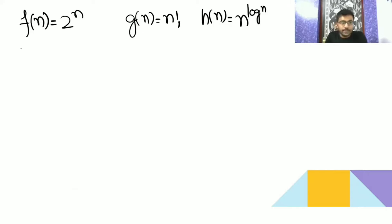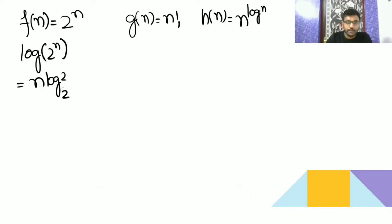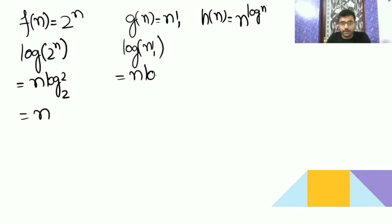Now take log on both sides. Log of Fn is going to be n log 2 base 2, so you get n. For Gn, log n factorial is going to be n log n by Stirling approximation.